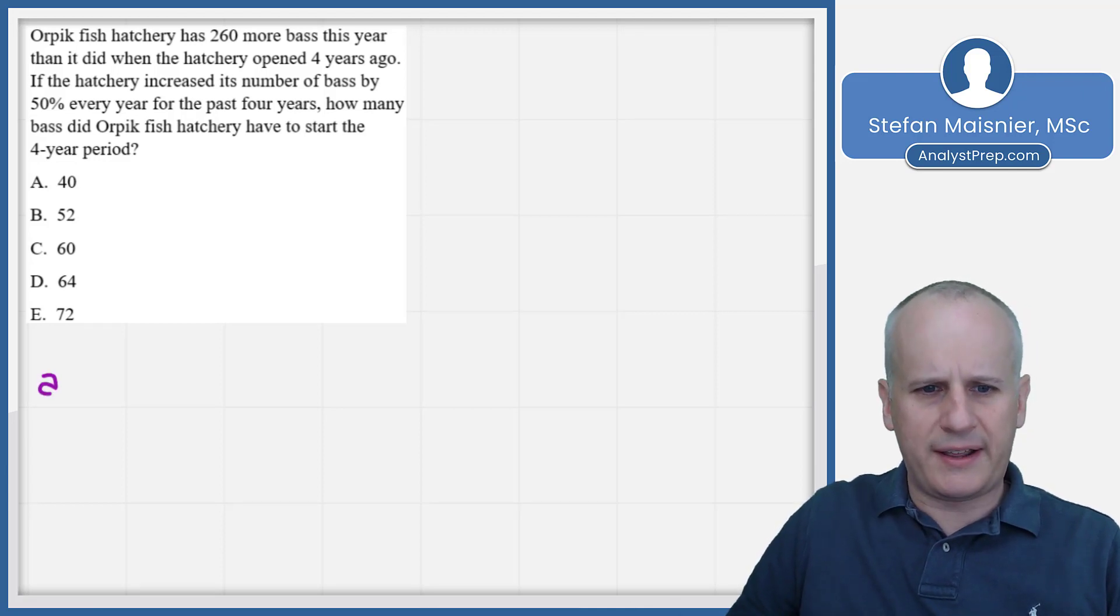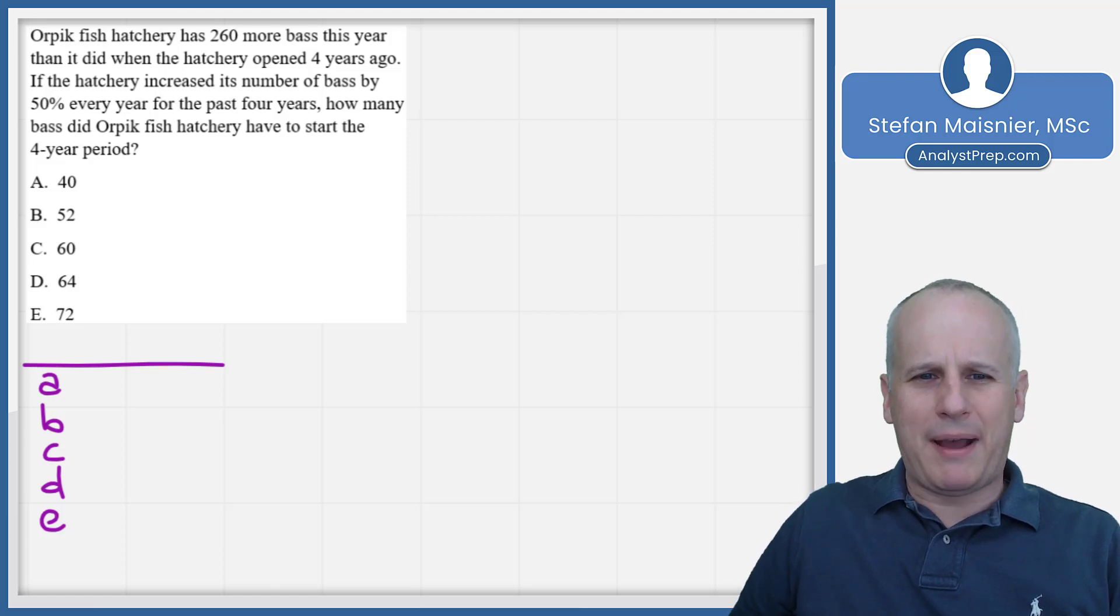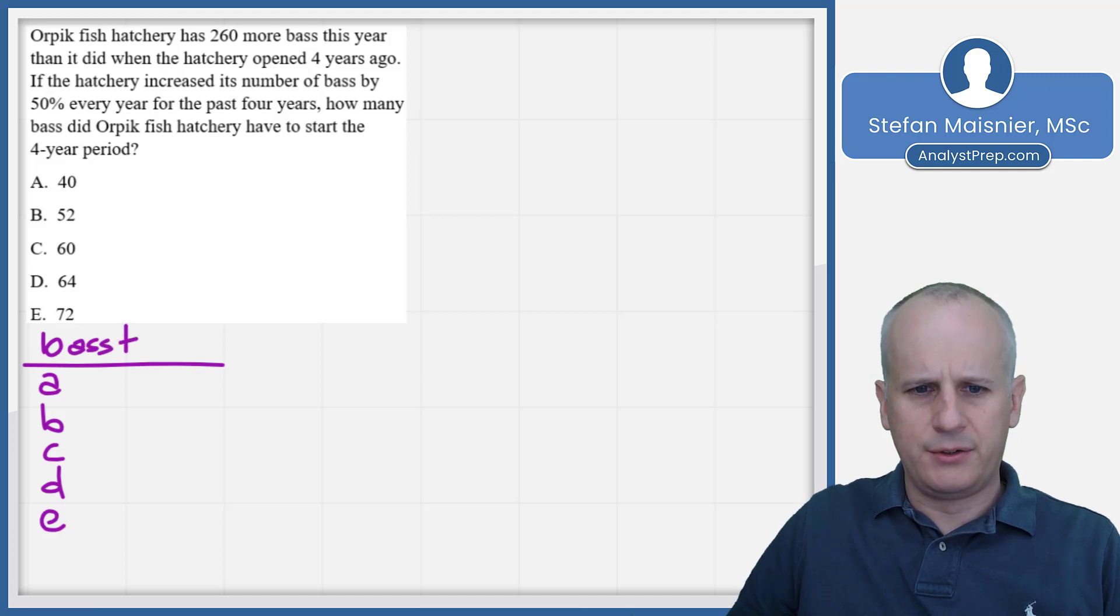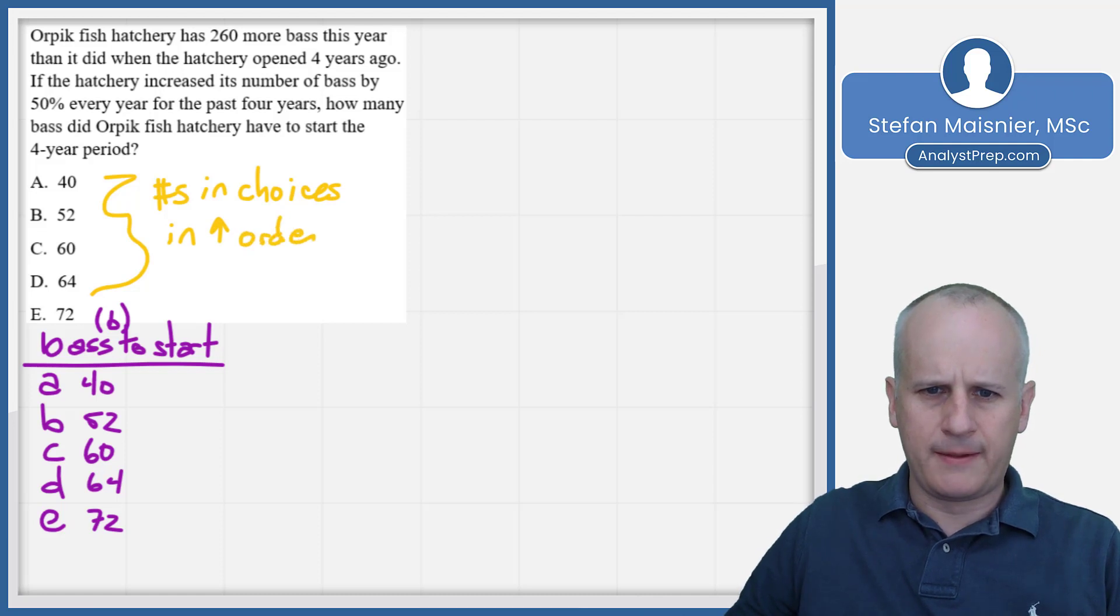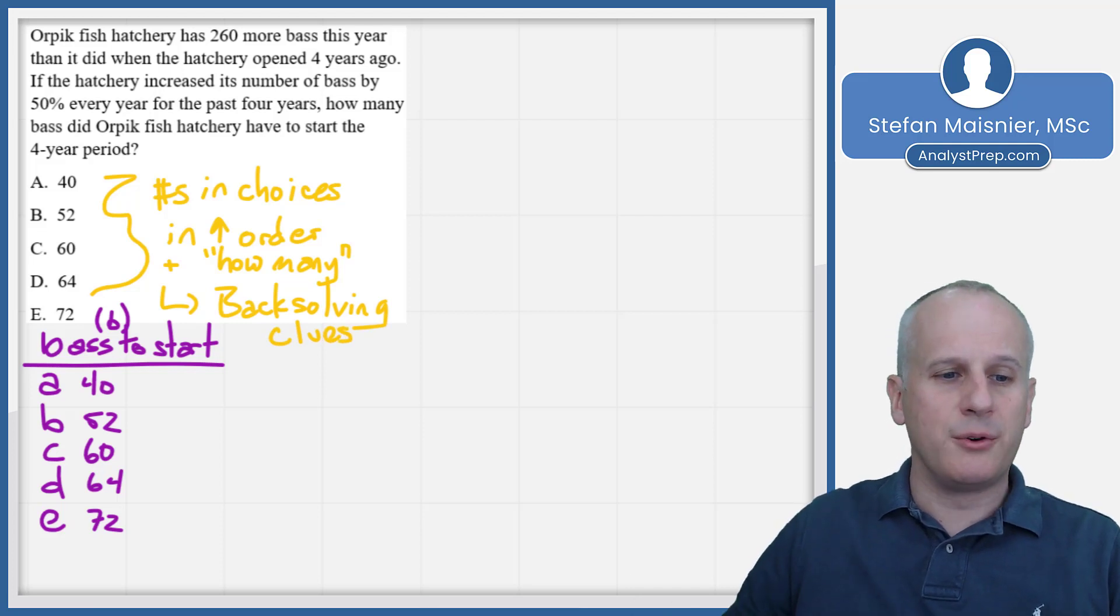Setting up our scratch work, we've got A B C D E here, put a little line over top, and we're looking, if we skip to the end, at how many bass did Orpik Fish Hatchery have to start the four-year period. So we want the bass to start, and we'll just call that b. So we've got real numbers so we'll write those out: 40, 52, 60, 64, and 72. We note that there are numbers in the choices in increasing order, plus we've got the phrase 'how many' framing our question, so that means that there might be a back solving opportunity.